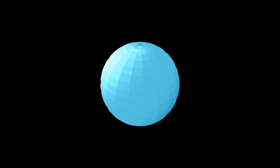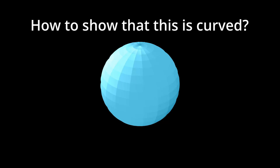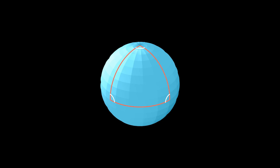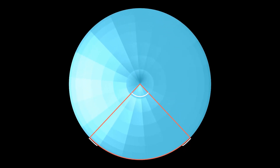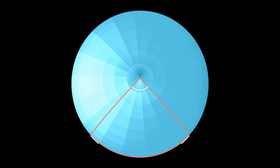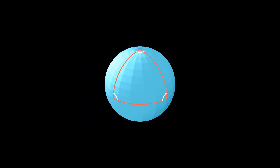Imagine you're standing on a giant sphere. How can you prove that you're not standing on a flat surface just by measuring angles and distances? One way is to walk in straight lines between three points and measure the angles. In this example, each angle is 90 degrees. When we add them up, the total is greater than 180 degrees.